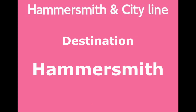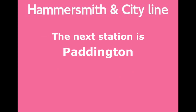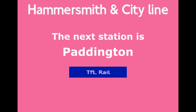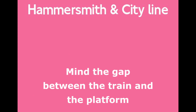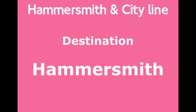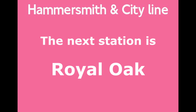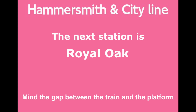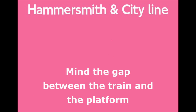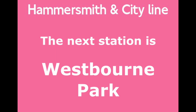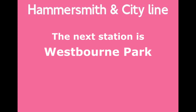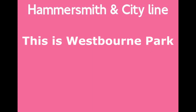This is a Hammersmith and City Line train to Hammersmith. The next station is Paddington. Change for TfL Rail and National Rail Services. Mind the gap between the train and the platform. This is Paddington. This is a Hammersmith and City Line train to Hammersmith. The next station is Royal Oak. Mind the gap between the train and the platform. This is Royal Oak. This is a Hammersmith and City Line train to Hammersmith. The next station is Westbourne Park. This is Westbourne Park.